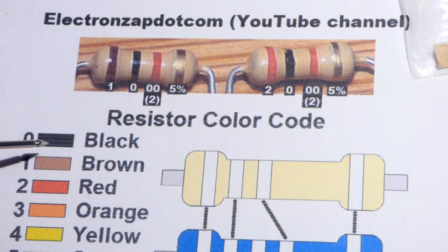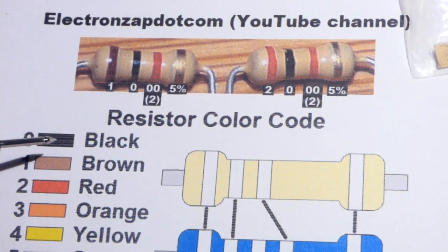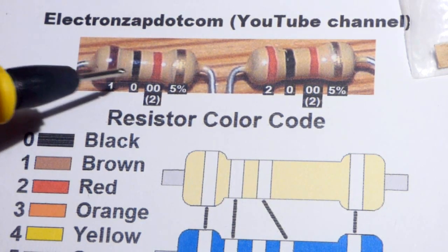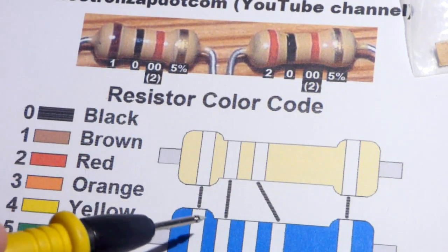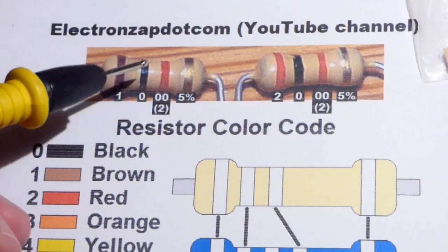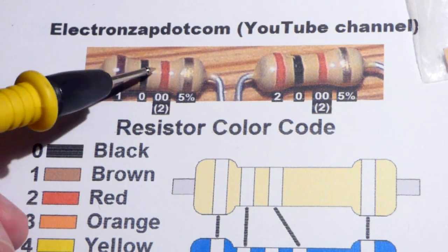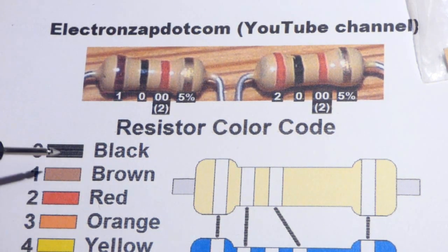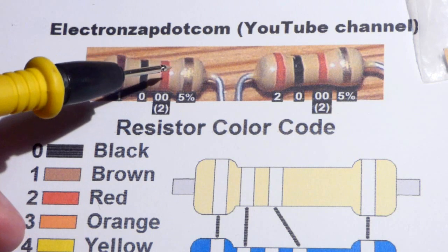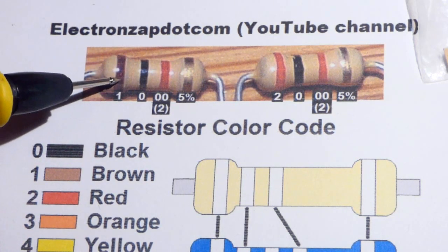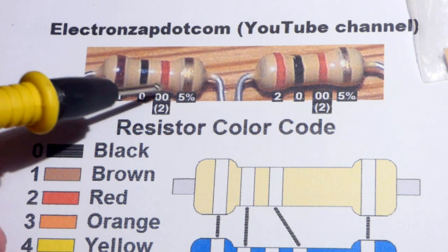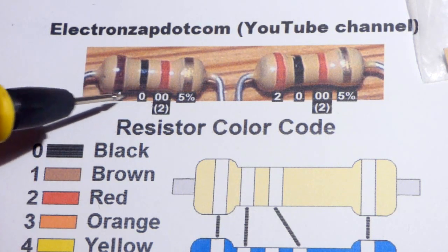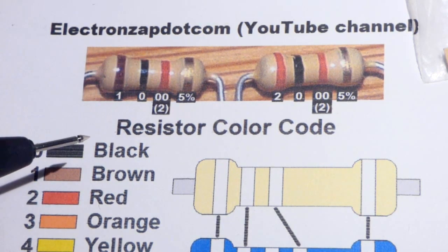So the next one is zero. So that's black. Right there is zero. So this is two digits plus a multiplier because it's four bands. The blue one will be three digits plus a multiplier. So the multiplier, if you just have the standard colors, red is two. So that means you take these two numbers and add two more zeros after it. So 1,0,0,0. So 1,000. This is a 1,000 ohm resistor right there.